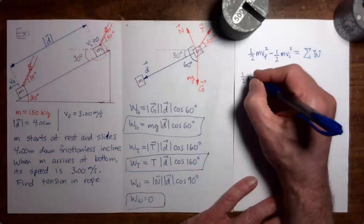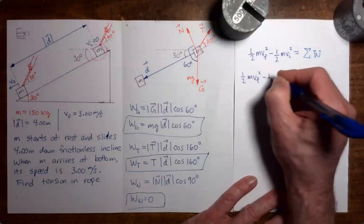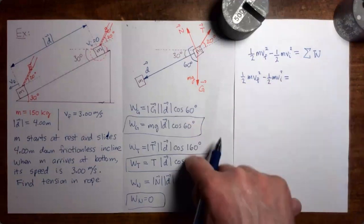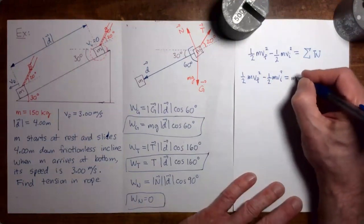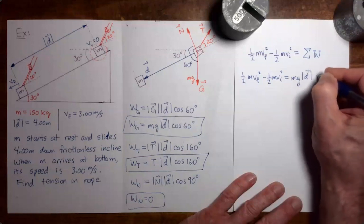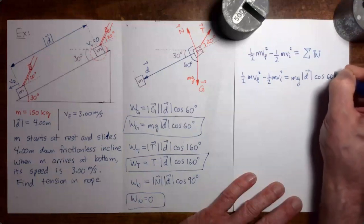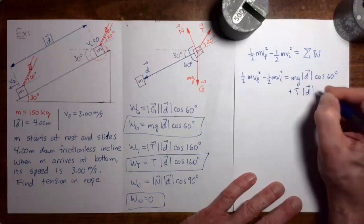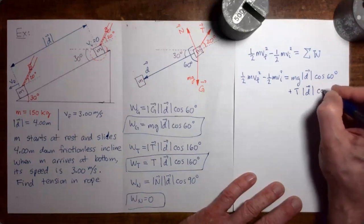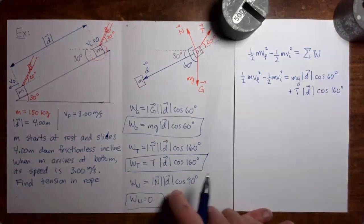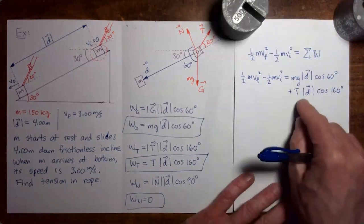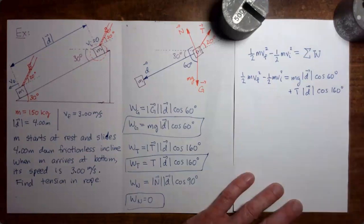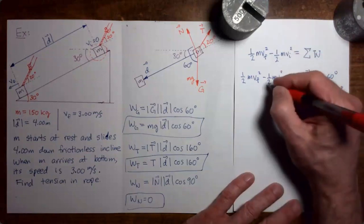Copying down the left side and adding the three terms on the right: mg times magnitude of displacement times cosine 60, plus T times magnitude of displacement times cosine 160, plus zero for the normal force. Since the initial speed is zero, that term drops out, simplifying the left side to one-half mv-final squared.